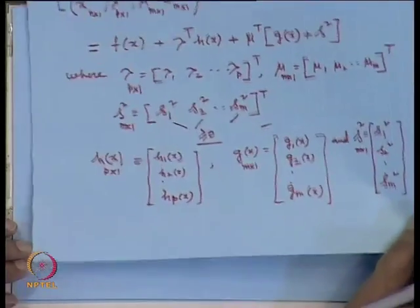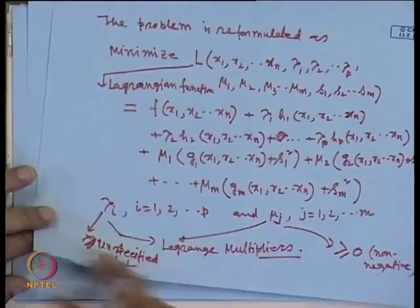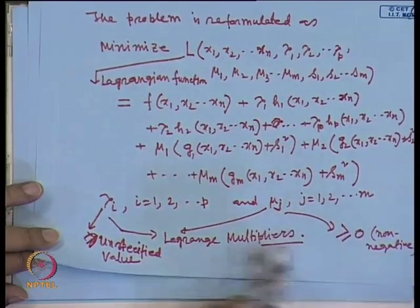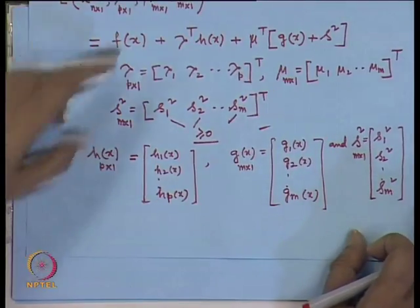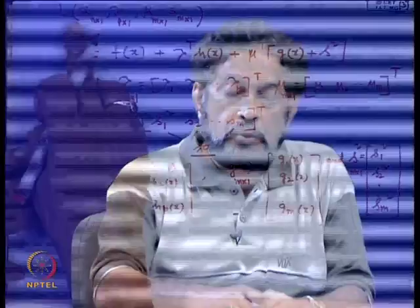Keeping all these things in mind — λ and μ are the Lagrange multipliers, λᵢ is unspecified, and μⱼ is non-negative — once we have the unconstrained optimization problem, instead of minimizing f we minimize L. The next step is the KKT conditions: necessary and sufficient conditions to minimize the Lagrangian function.